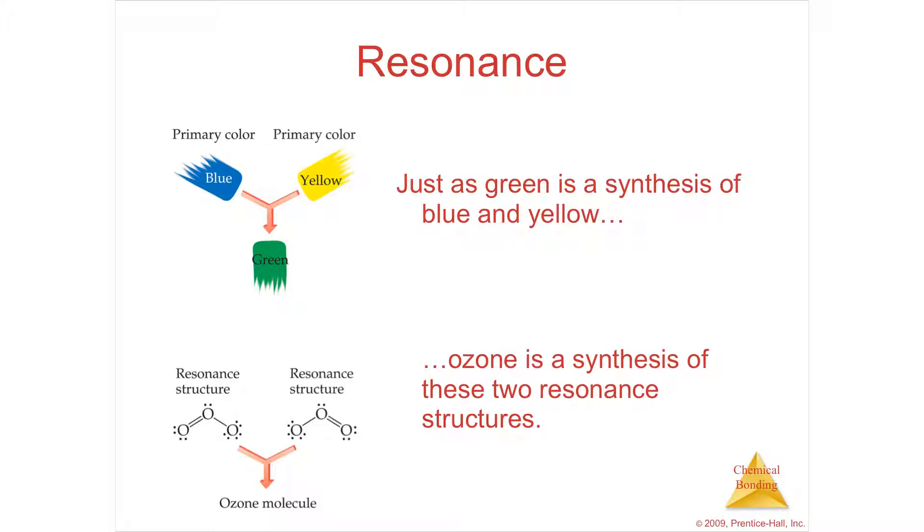A resonance structure is not one Lewis structure or the other, or even going back and forth between them, but it's its own thing caused by a blending of the two. The two resonance structures that would describe ozone together describe it - not one or the other, but the average, a synthesis of the two.